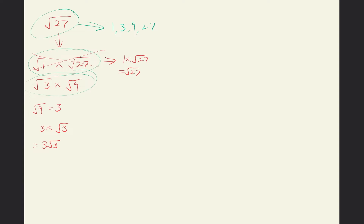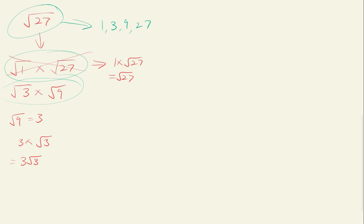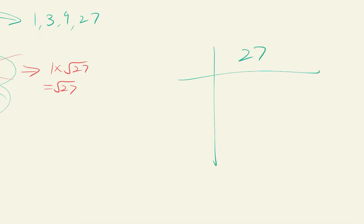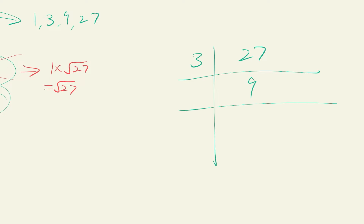The next method is the ladder method. Start with 27 and divide by the smallest whole number that works. We skip 1, try 2 — doesn't work since 27 divided by 2 isn't a whole number — so we go to 3. 27 divided by 3 gives 9, then 9 divided by 3 gives 3, then 3 divided by 3 gives 1. We stop when we reach 1.